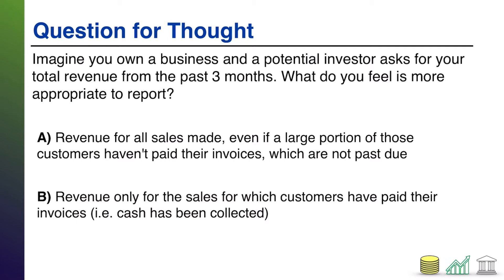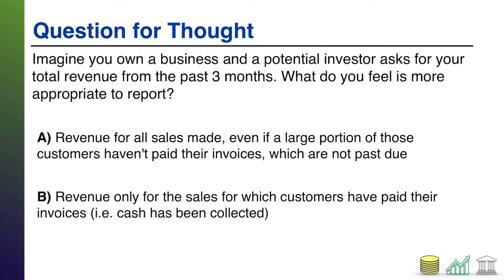The main difference between these two options is: in one case, you're giving them a larger revenue number — that would be option A — but you don't have all of that in cash, so there is the possibility you don't get paid. Or B, a smaller revenue number representing only the cash that you've received so far, but you might actually be getting more later. Which of these do you think is more appropriate to give to an investor?